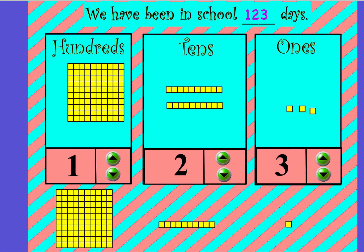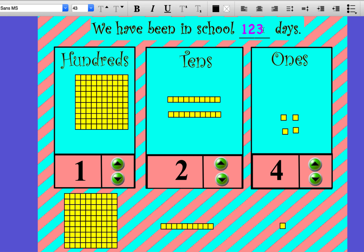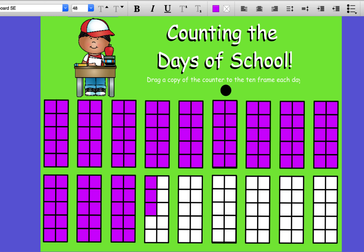How many days have we been in school? Let us count. We have 100, we have 210 — so that's 10, 20, 120. Yesterday we had 123, so today we have 124. We're going to make this look like the dots on a dice and switch our number up here to 124.